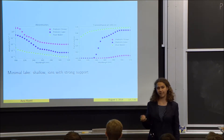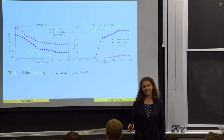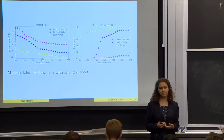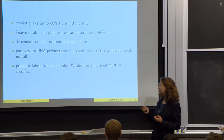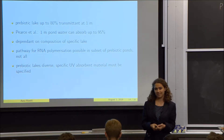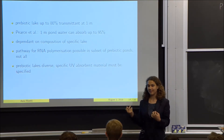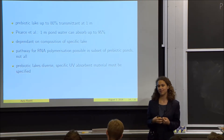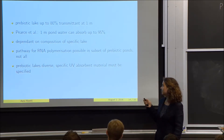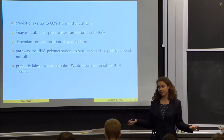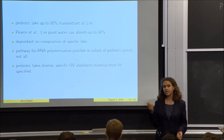We then moved into modeling a prebiotic lake. Modern lakes are very diverse in their composition, and we believe prebiotic lakes were as well. To get a lower bound, we modeled a very basic prebiotic lake — with pure water and only the ions we know inevitably to have been present. We found this prebiotic lake was less absorbent than the prebiotic ocean, with up to 80% transmittance at one meter. This was in contradiction to the findings of Pierce et al., and it shows that the UV absorbance of prebiotic lakes is in fact very diverse — 95% UV absorbance cannot be automatically assumed.